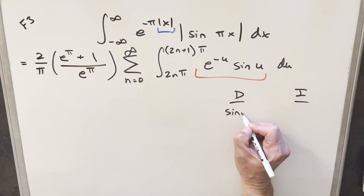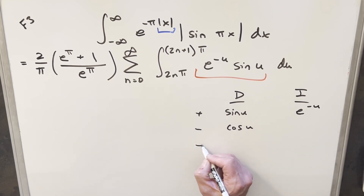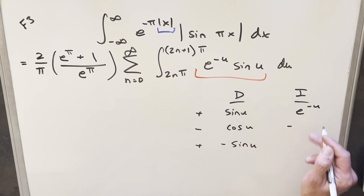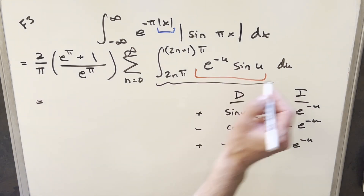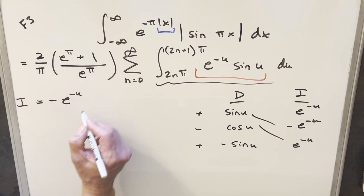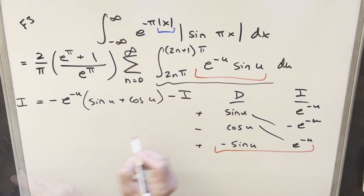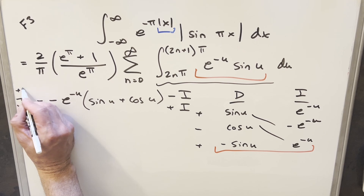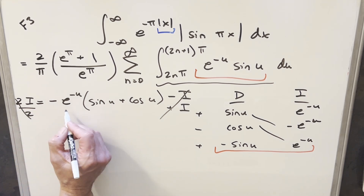Setting up the table: differentiating sin u gives cos u, then −sin u. Integrating e^(−u) gives −e^(−u), then +e^(−u). Reading off the diagonals, I'll call the whole integral I and factor out −e^(−u), which gives us −e^(−u)(sin u + cos u). The remaining diagonal term produces another integral of e^(−u) sin u, which is just −I. So we have I = −e^(−u)(sin u + cos u) − I. Adding I to both sides: 2I = −e^(−u)(sin u + cos u), so I = −(1/2) e^(−u)(sin u + cos u).